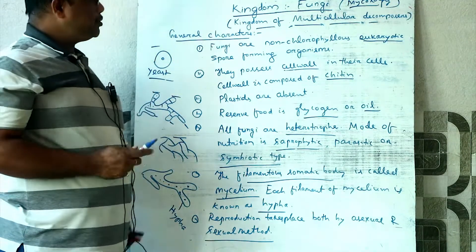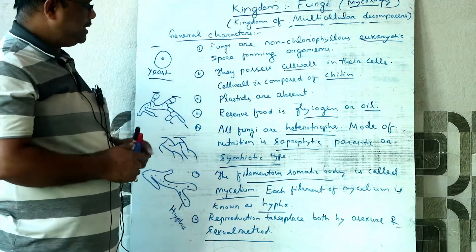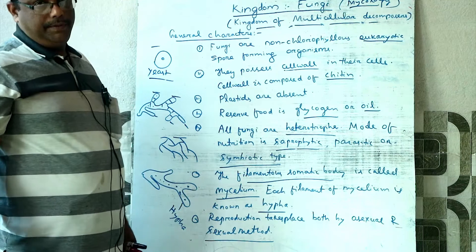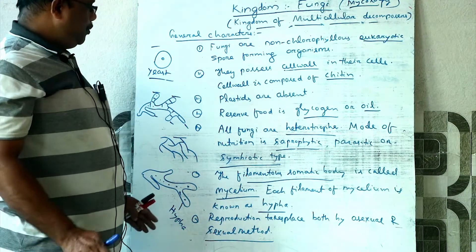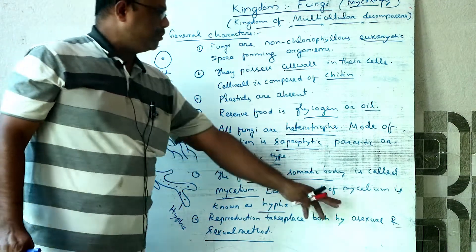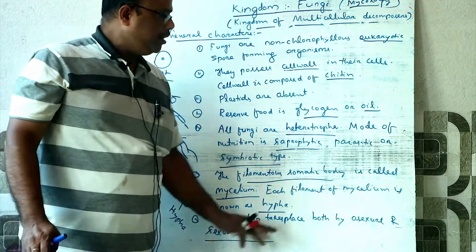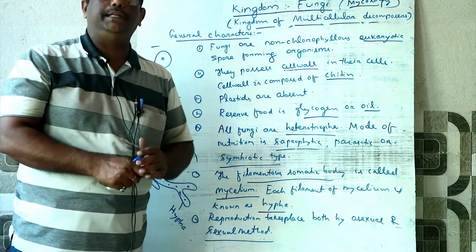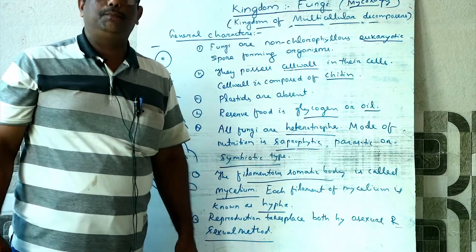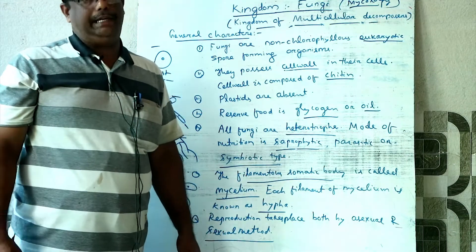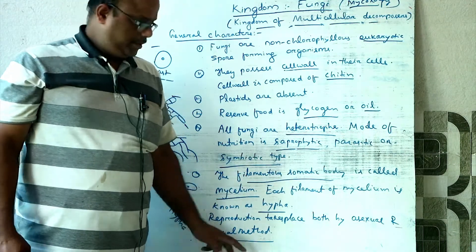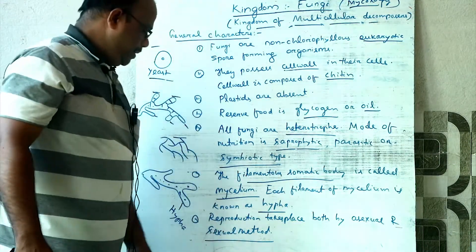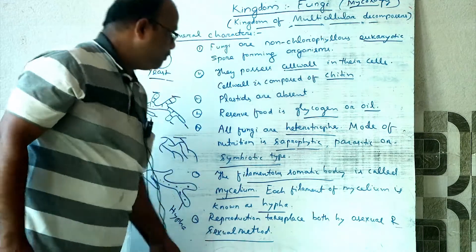Fungi reproduce by both asexual and sexual methods. The asexual reproduction of fungi takes place by means of spores or conidia. Let us discuss the reproduction of fungi.